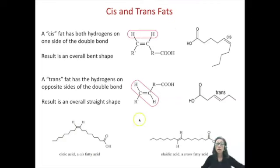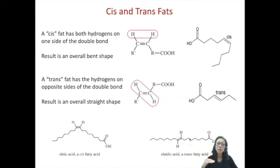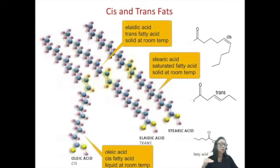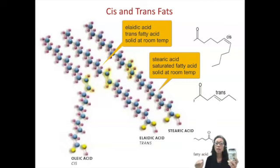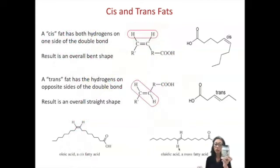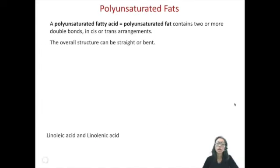By comparison, a trans or straight overall shape allows molecules to stack up, which easily forms a solid at room temperature. Coconut oil is an example — it's a solid, not a liquid, because those straight molecules stack up easily. However, many of these fats and oils have a low melting point, so depending on the room temperature, coconut oil can actually become a liquid fairly easily.